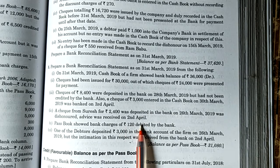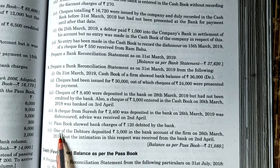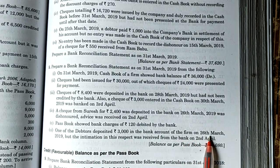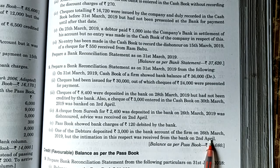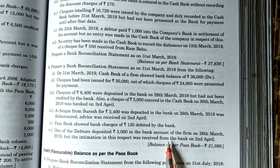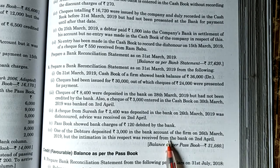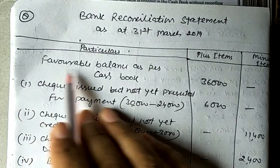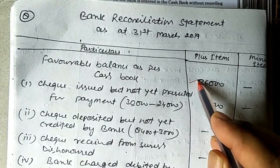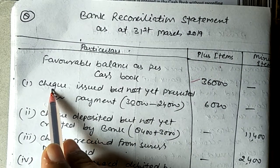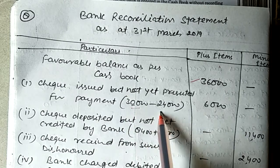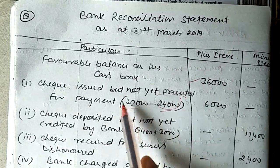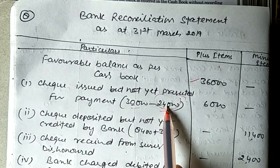Bank charges of 120 rupees debited by the bank — the bank has deducted 120 rupees from our account, so we need to minus the cash book. A direct deposit of 3,000 into the bank has occurred, so we will plus this in our cash book. Now let us see the proper solution. The amount not yet presented for payment: 30,000 minus 24,000 that was already presented — so that leaves 6,000 rupees which we record as a plus item.